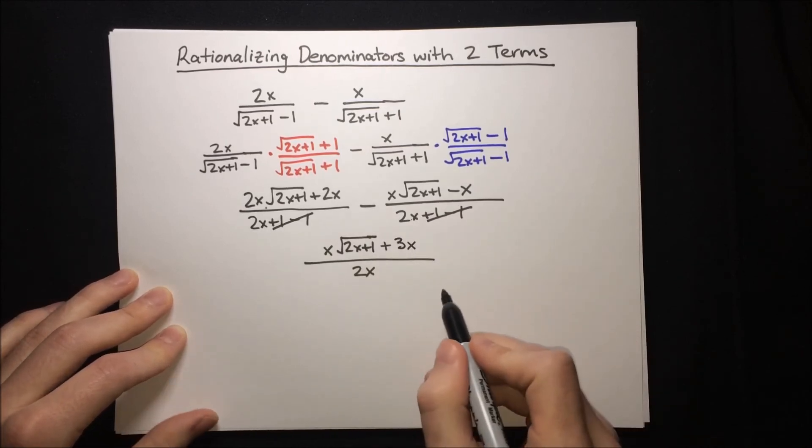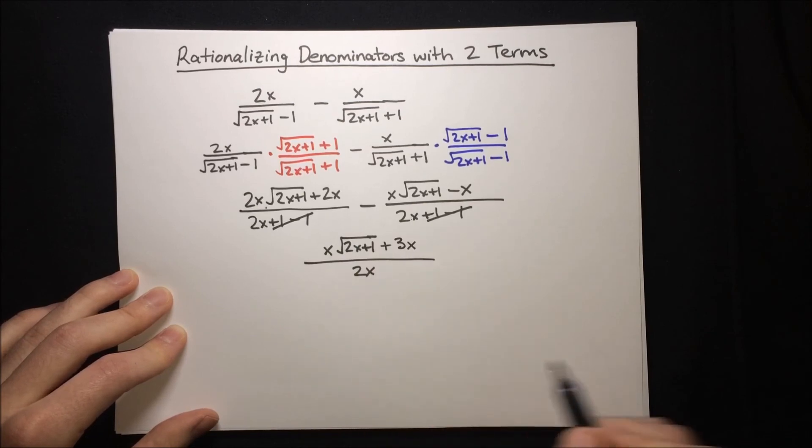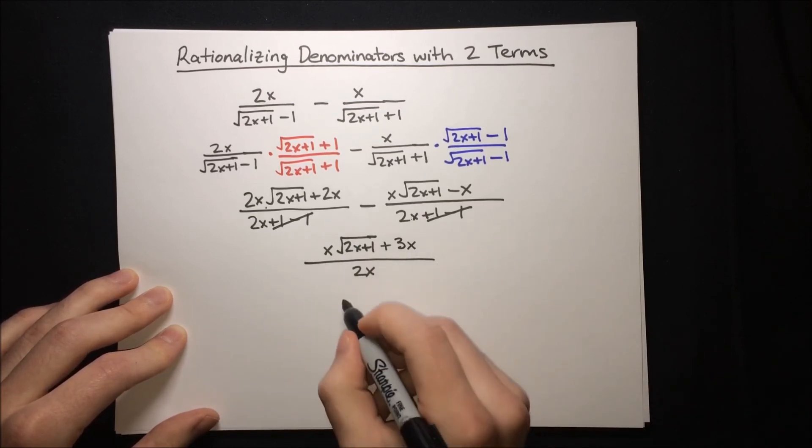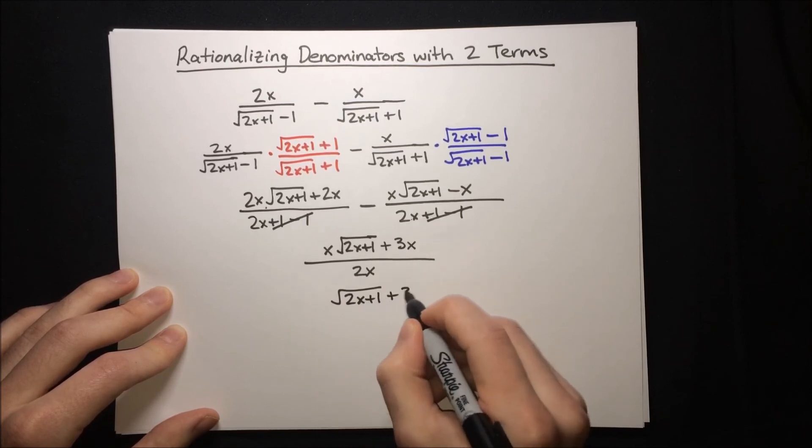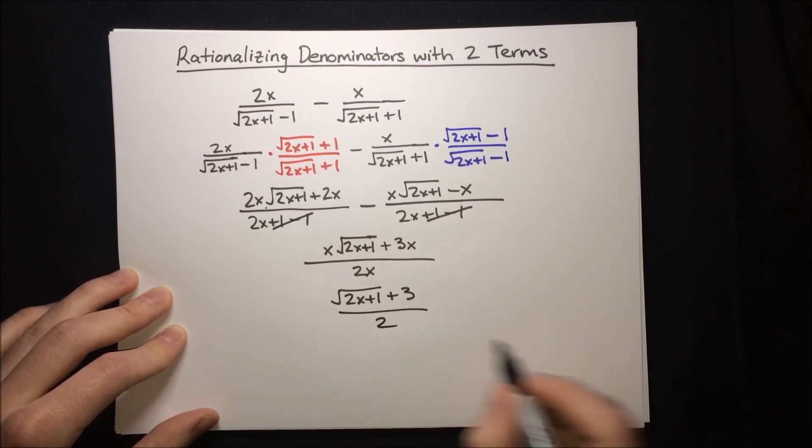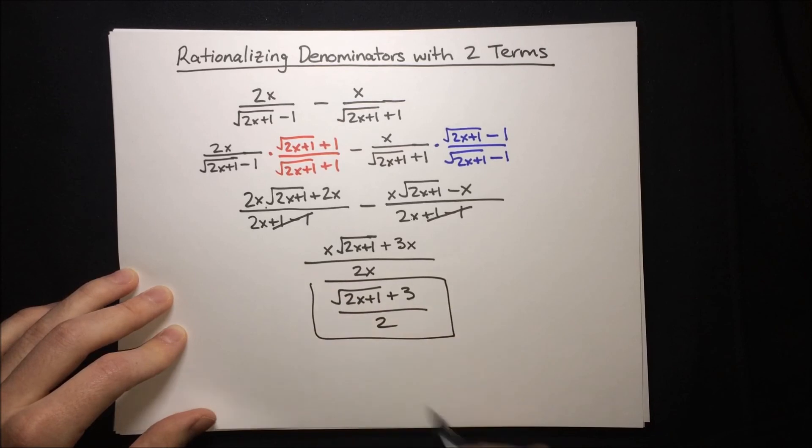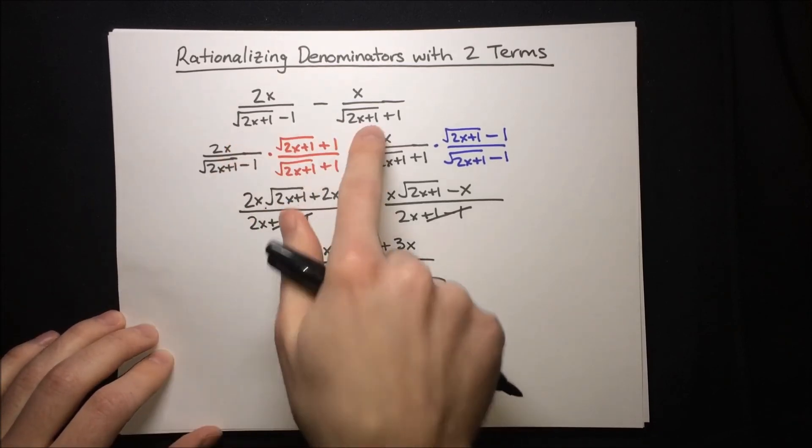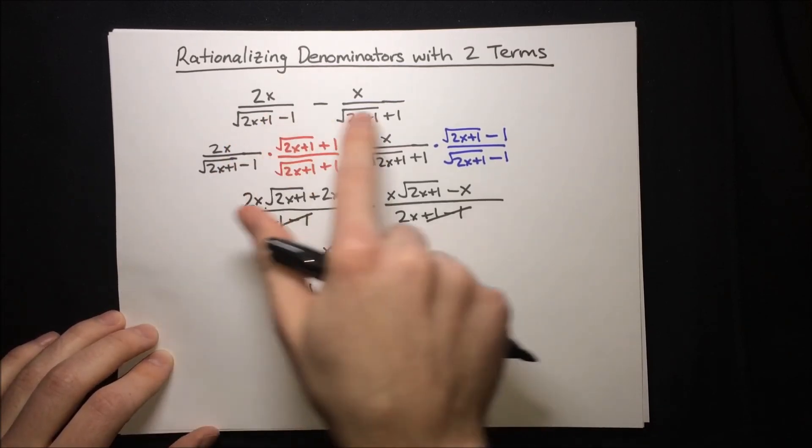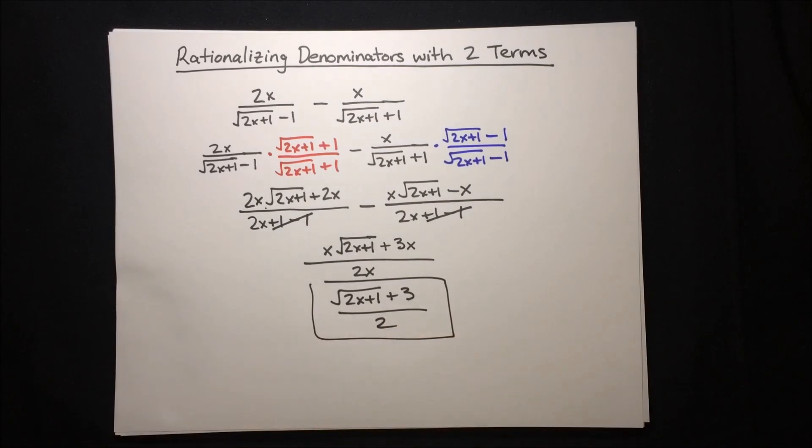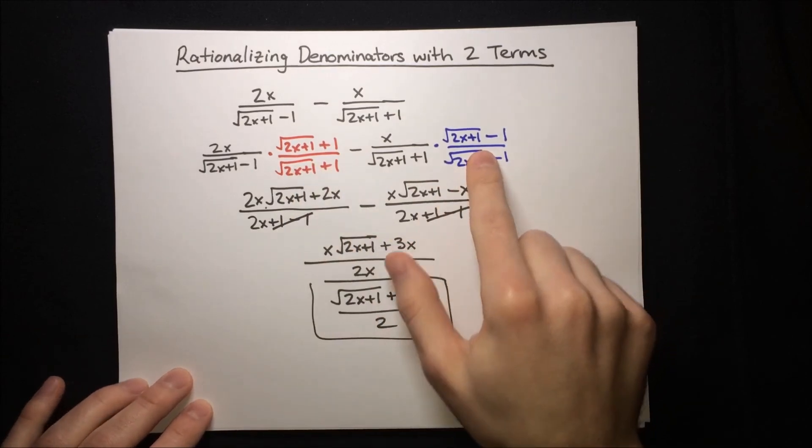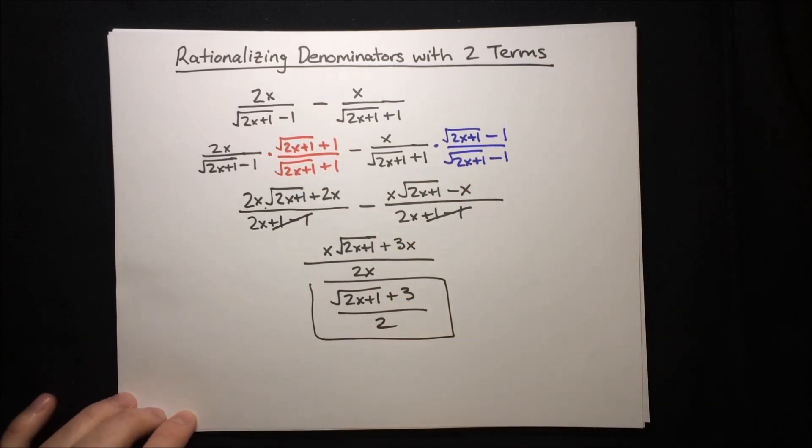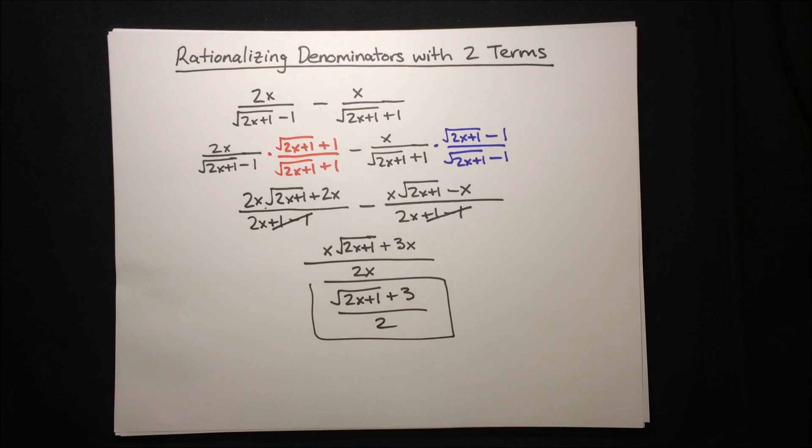And lastly, to simplify, we see there's an x in everything, so let's just cancel out that x and get root 2x plus 1 plus 3 over 2. And there we have it. We're done. No radicals in the denominator, and both fractions combined into a single fraction quite nicely. This technique of multiplying by the conjugate to rationalize an expression will come up in more advanced topics, too, such as dividing complex numbers.